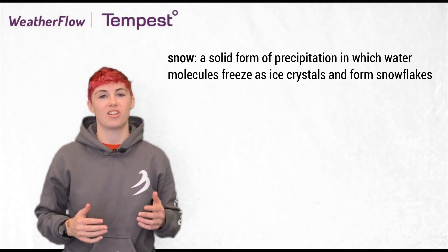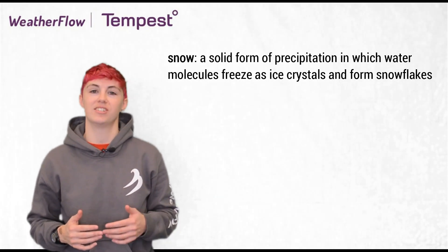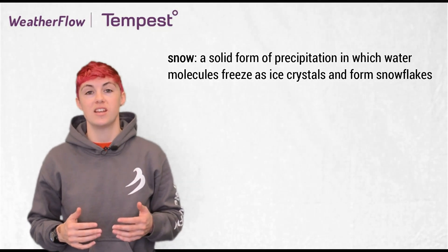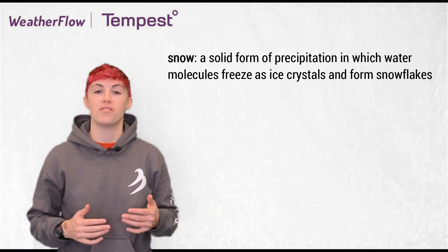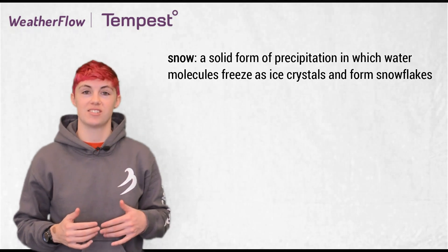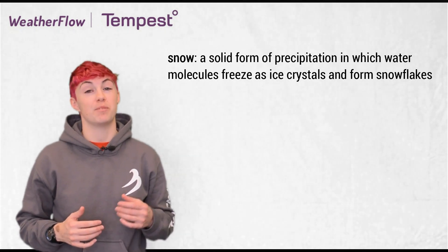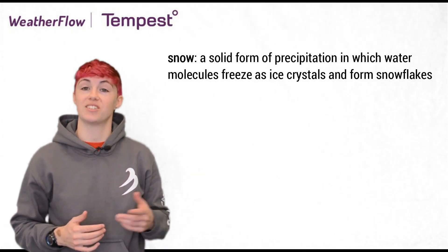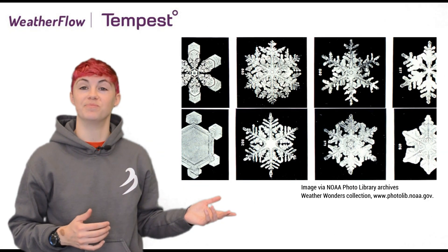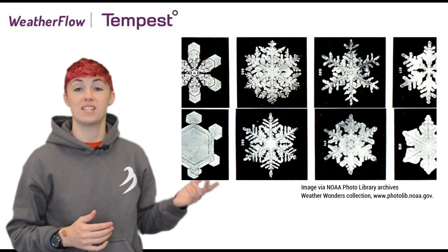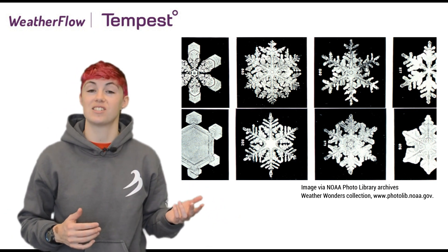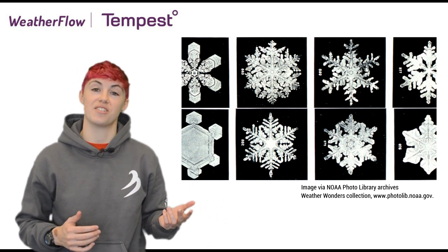Snow is a type of solid precipitation where water molecules take the form of ice crystals. And on a microscopic scale, that looks like this. Specifically, these are called snowflakes, and lots of snowflakes together make snow.